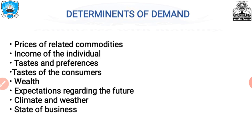The fifth determinant is wealth. The amount demanded for a commodity is also affected by the amount of wealth as well as its distribution. The wealthier the people, the higher the demand for normal commodities. If wealth is more equally distributed, the demand for necessities and comforts is more. On the other hand, if some people are rich while the majority is poor, the demand for luxuries is generally less.